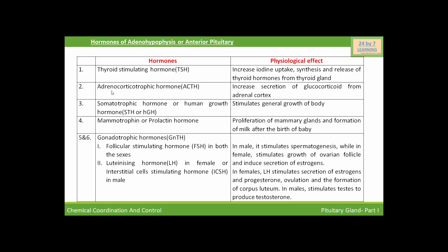Next is the adrenocorticotropic hormone. Adrenocorticotropic hormone controls the structure and function of the adrenal cortex, especially the secretion of glucocorticoids from it. It increases the secretion of glucocorticoids from the adrenal cortex.